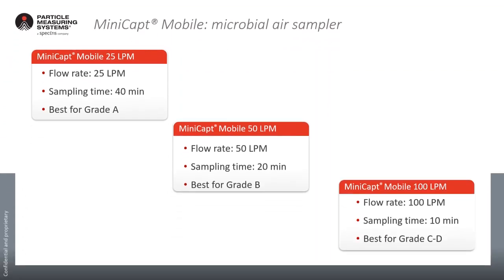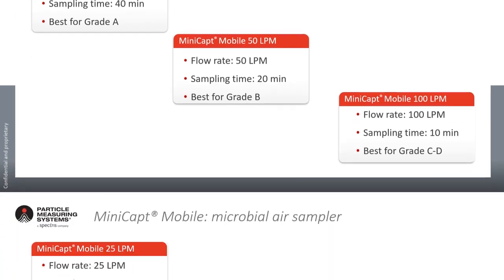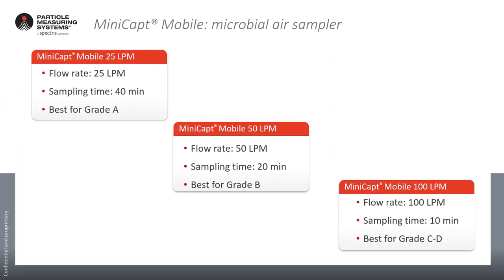Thank you, Mark, for that great presentation. I will now ask Julia to talk about our BioCAP and MiniCAP mobile instruments. The MiniCAP mobile is available in three different flow rates: 25, 50, and 100 liters per minute, which allow you to choose the best solution based on your specific needs. One of the most important parameters to consider when choosing the most appropriate flow rate is the grade of your clean room in which you perform the sampling.